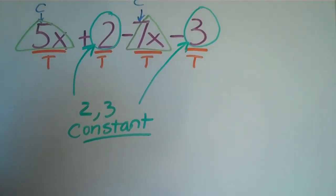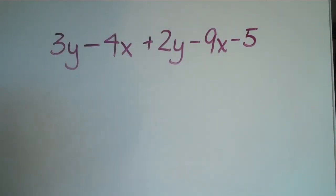Okay, so that's really it. Let's go ahead and do another one just so you feel comfortable with this. This is a little bit longer. Okay, so now we have 3y minus 4x plus 2y minus 9x minus 5. Okay, so let's do the same thing we did last time.